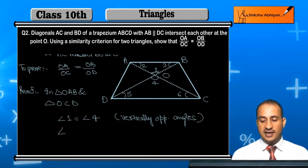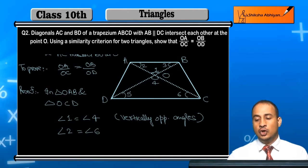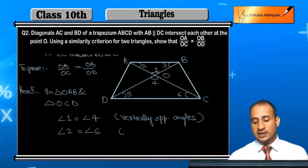Also student, angle 2 is equal to angle 6. Why? Because AB and CD are parallel and AC is their transversal. Therefore both are alternate angles.